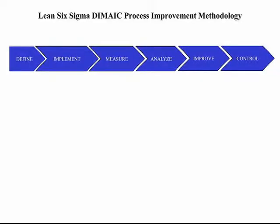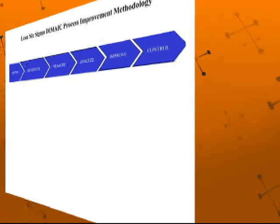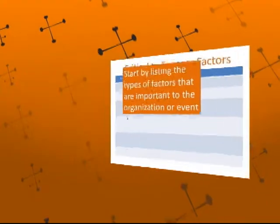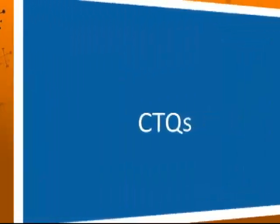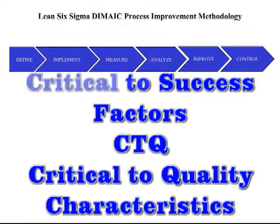Welcome. In this lesson, I will introduce two new tools that are relevant to the implement phase of the DMAIC process. They are the CSF, or critical to success factors, and the CTQ, or critical to quality characteristics. So let's get started.